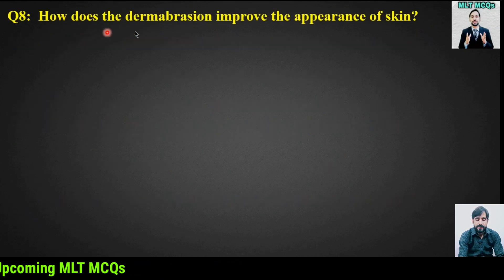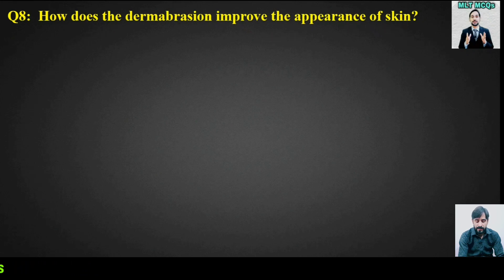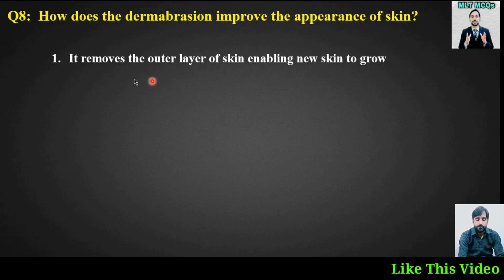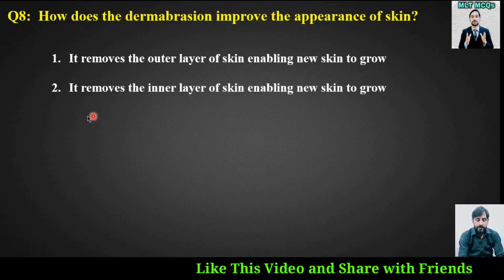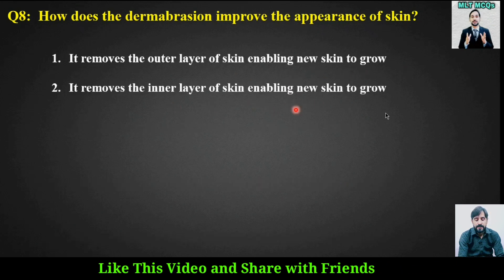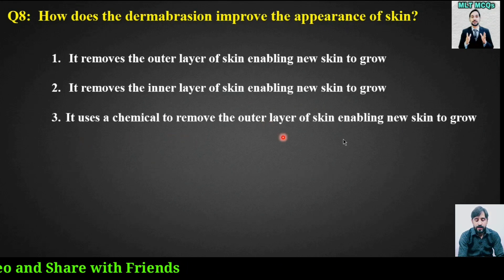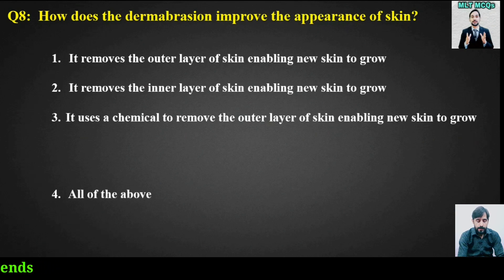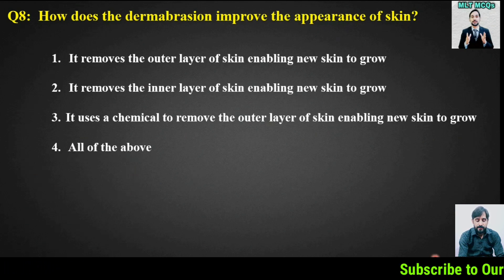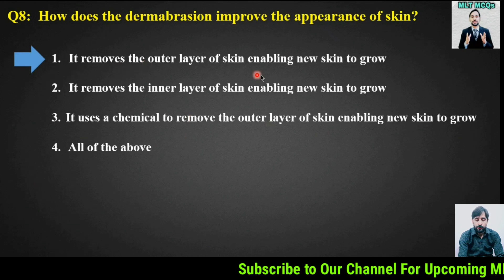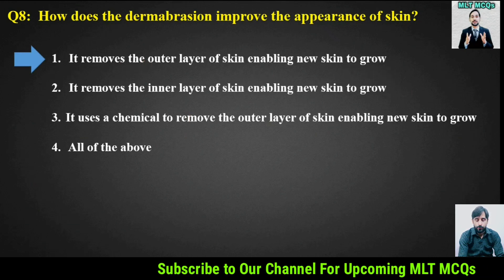MCQ number 8: How does dermabrasion improve the appearance of skin? Options are: it removes the outer layer of skin enabling new skin to grow; it removes the inner layer of skin enabling new skin to grow; it uses a chemical to remove the outer layer of skin enabling new skin to grow; or all of the above. The right answer is option 1 — it removes the outer layer of skin enabling new skin to grow.